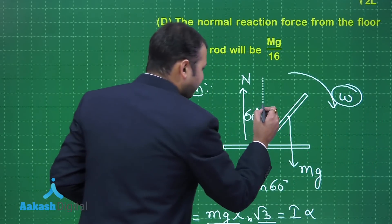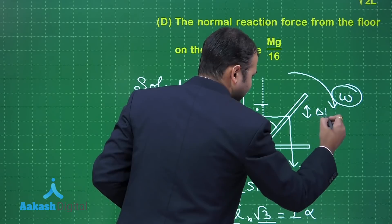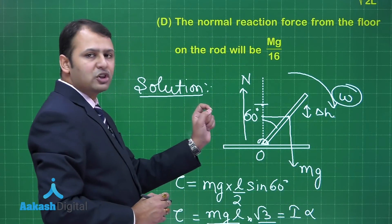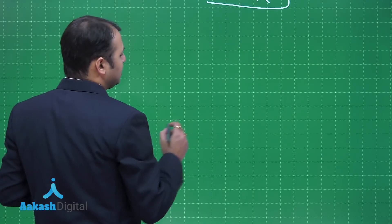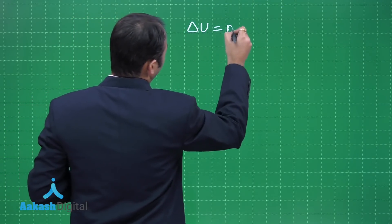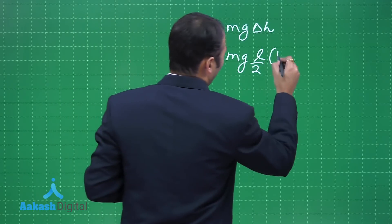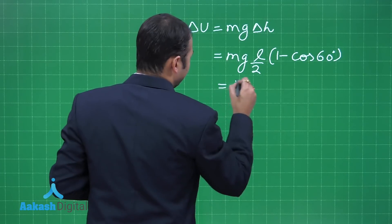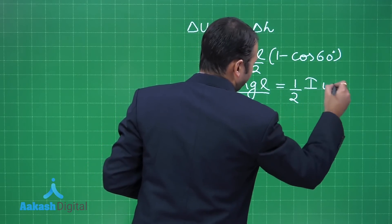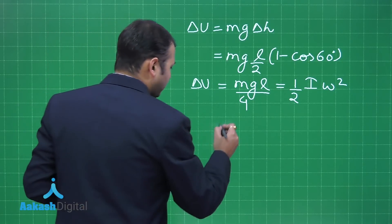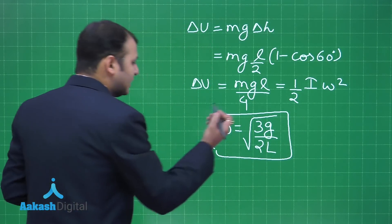To find ω, note that the center of mass drops in height by Δh as the rod falls. Using energy conservation: ΔU = (1/2)Iω². The potential energy change is mg × (L/2) × (1 − cos 60°) = mgL/4. Setting mgL/4 = (1/2)(ML²/3)ω² and solving gives ω = √(3g / 2L).